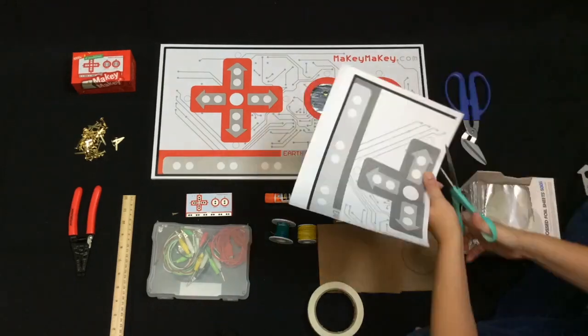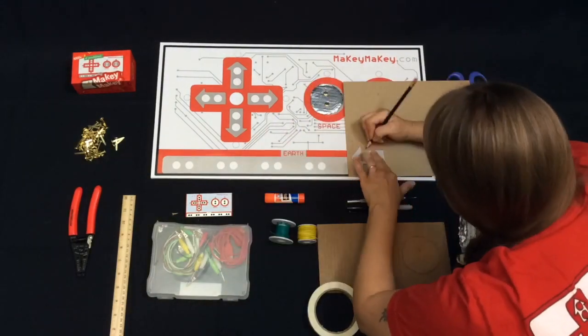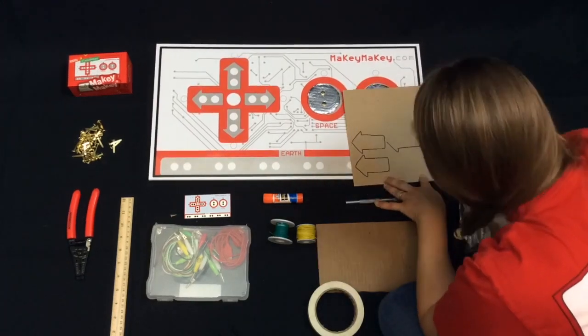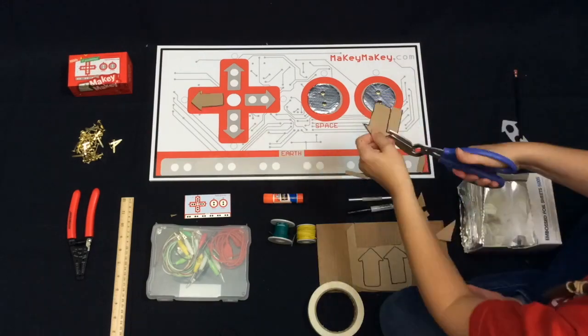Use a printout of your arrow keys to get the exact measurement that you need to match your gigantic Makey Makey. Draw four arrows, cut them out, using your canary cardboard scissors, and it'll be a lot easier than trying to cut cardboard any other way.